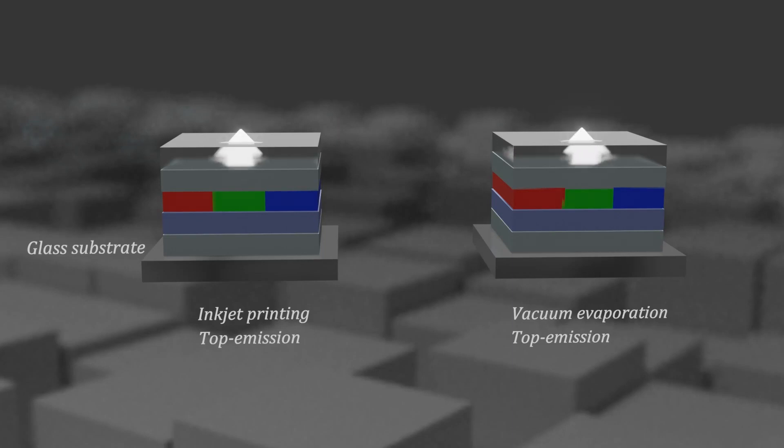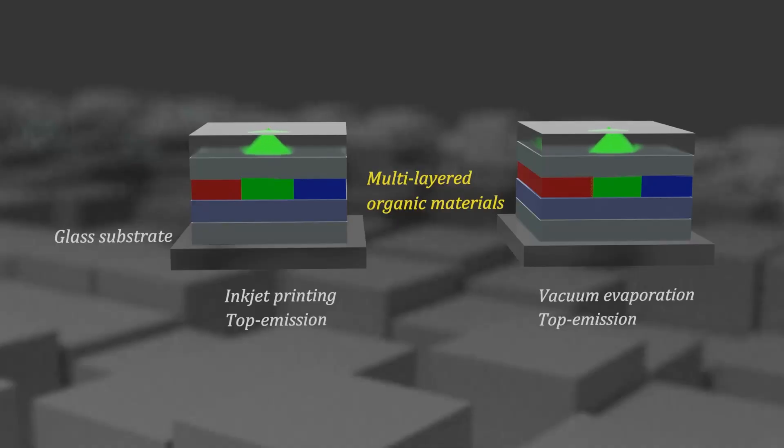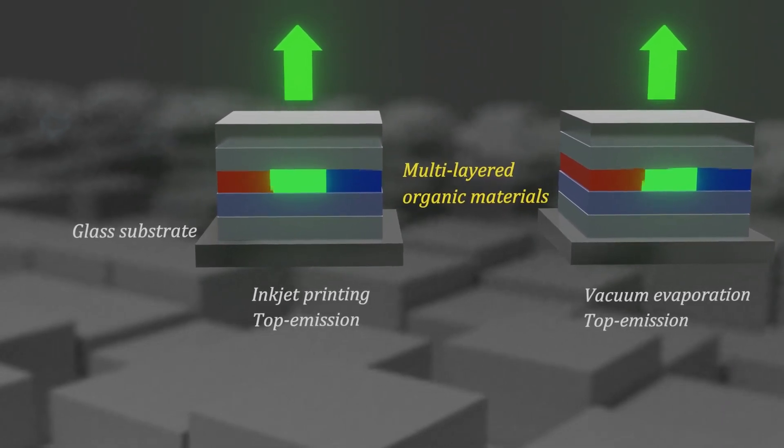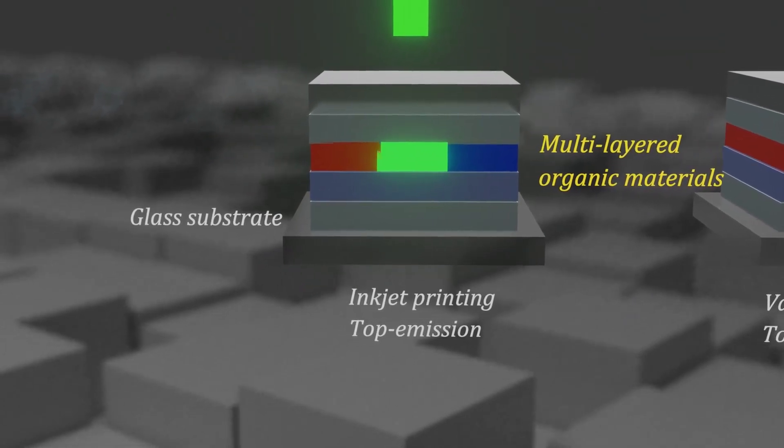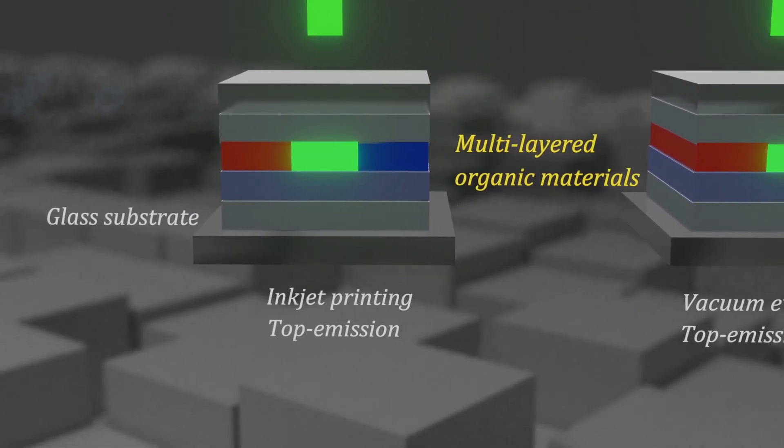And, similar to the printing method announced by TCL, the top emission method in which light emits upwards on the glass substrate is adopted. The fact that each subpixel of RGB has a multi-layered structure is also similar to each other. By optimizing the thickness of each layer, the width of the emission spectrum is made narrow and the color gamut is increased.